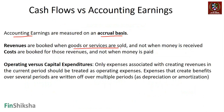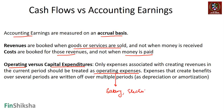Revenues are booked when goods and services are sold, not when money is received. Costs are booked for those revenues, not when the money is paid. We also need to understand operating versus capital expenditure. Only expenses associated with creating revenue in the current period should be treated as operating expenses — for example, salaries and electricity costs.